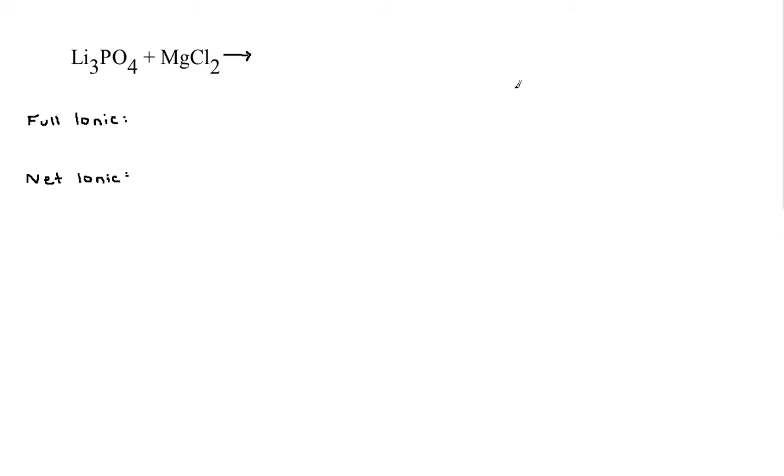So the first thing for you to know is that for a double replacement reaction, innies and outies go together. So Li is an outie, so it's going to go with the Cl, and Mg is an innie, so it's going to go with PO4.